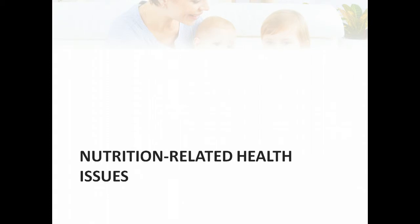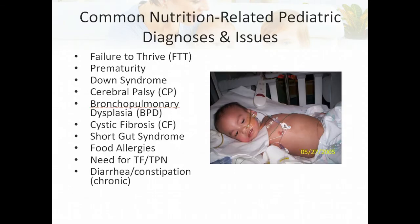We've separated out normal growth and development from the non-normal health-type issues, and we'll address that second arm in this part of the lecture. Some of the common nutrition-related pediatric diagnoses you might come across include failure to thrive, prematurity, Down syndrome, cerebral palsy, bronchopulmonary dysplasia, cystic fibrosis, short gut syndrome, food allergies, the need for tube feeding or TPN, chronic diarrhea, constipation, or vomiting.